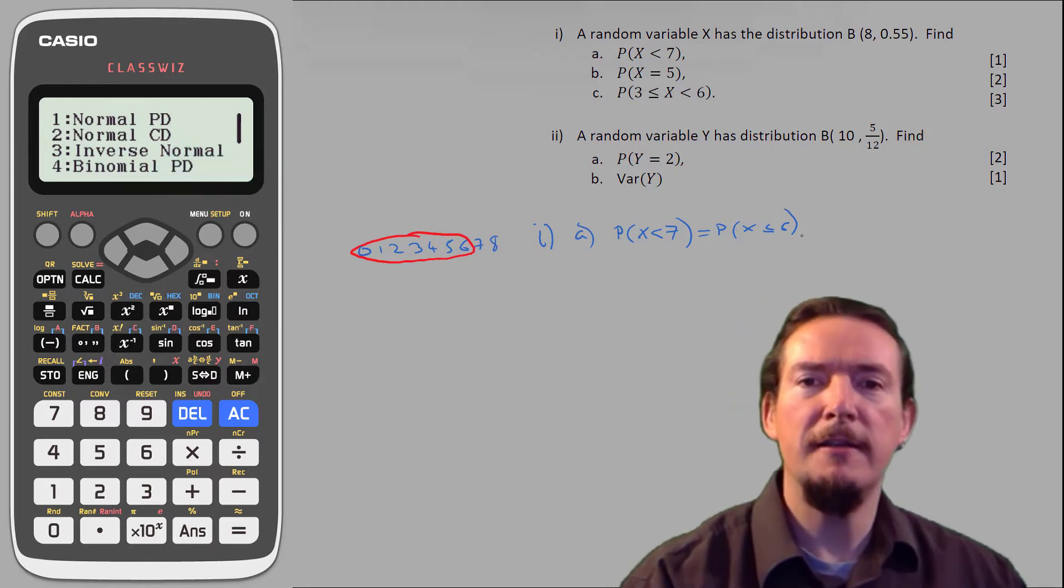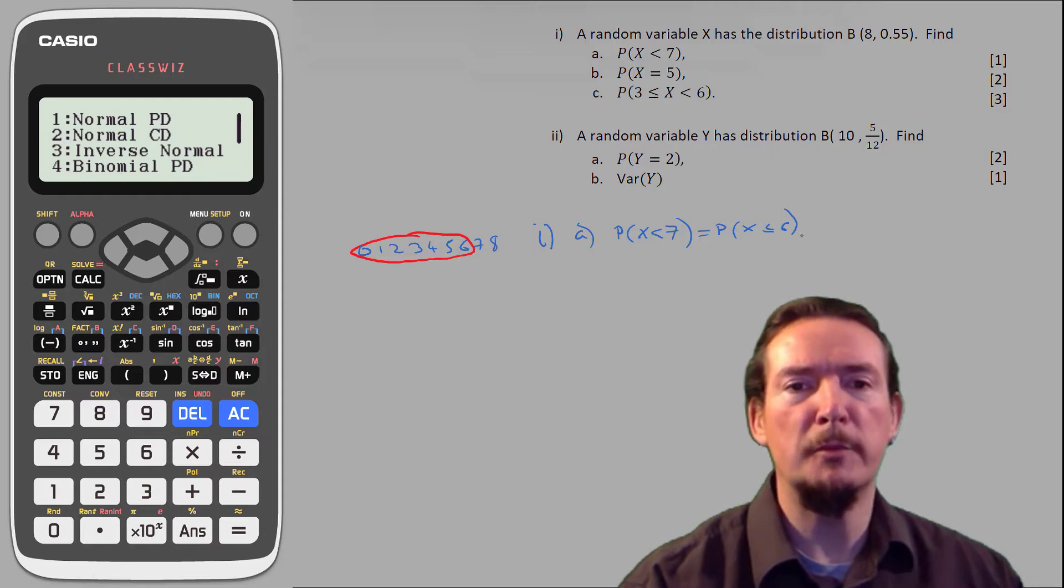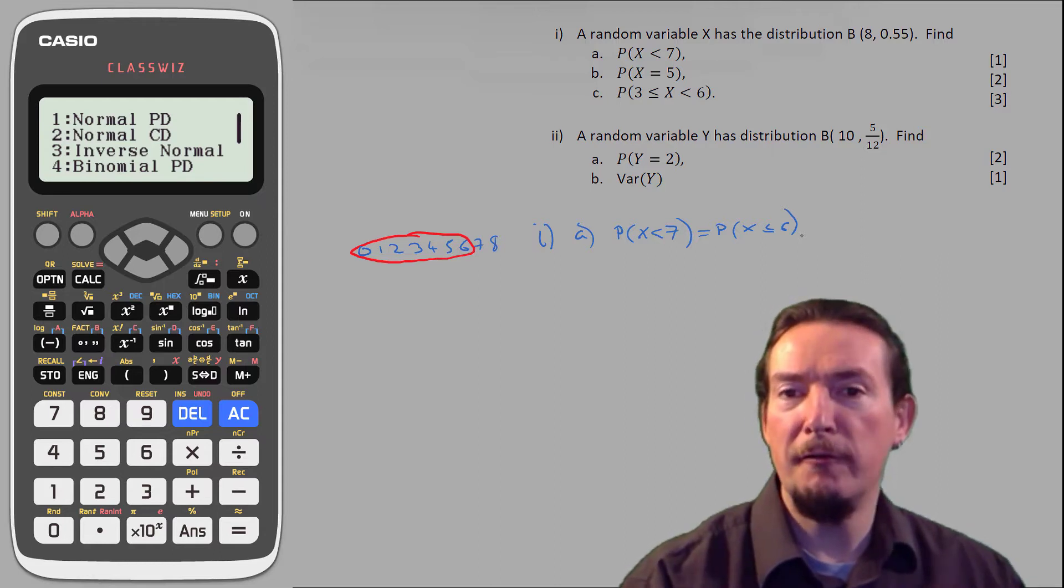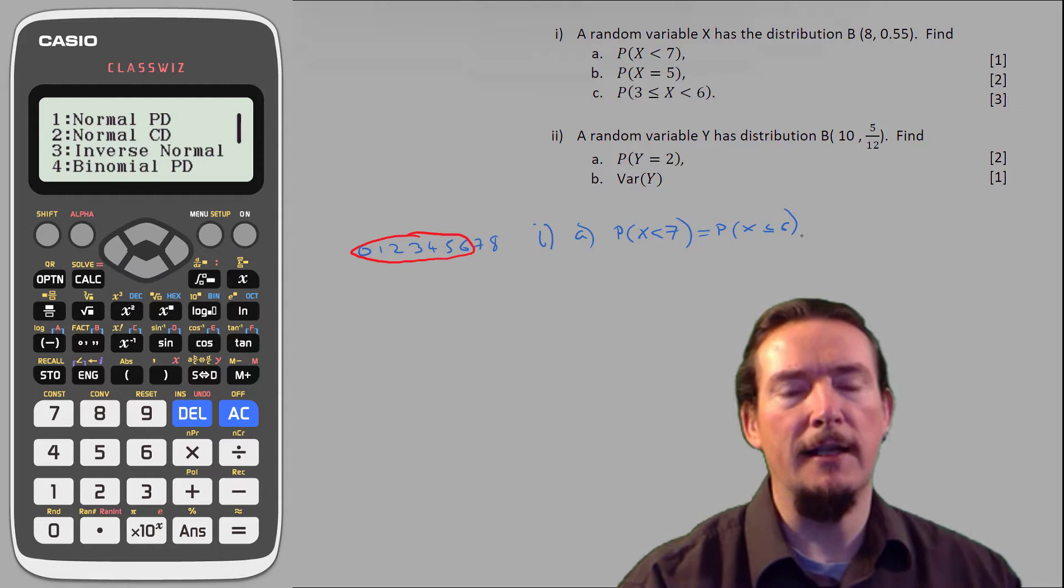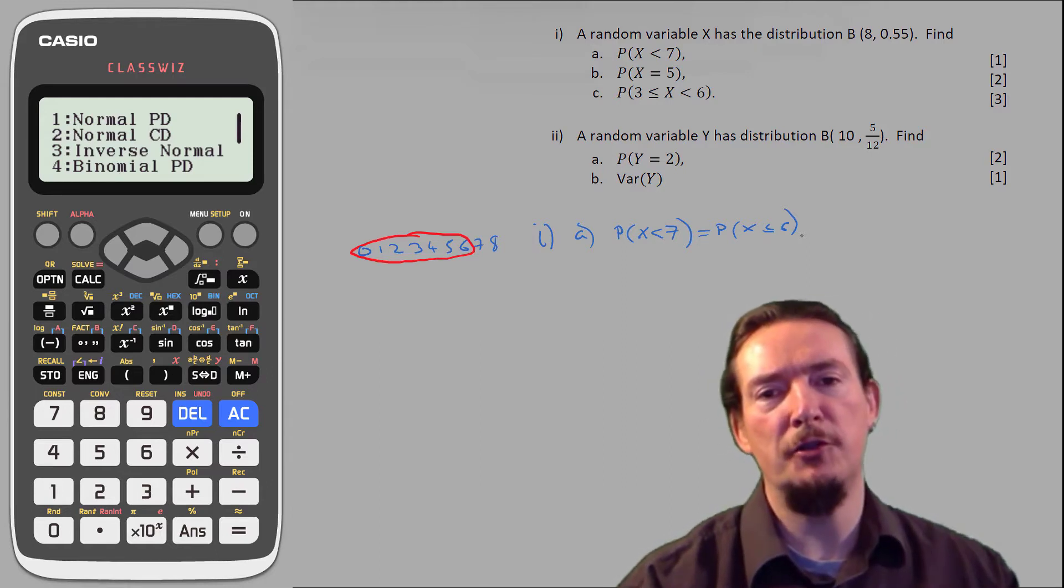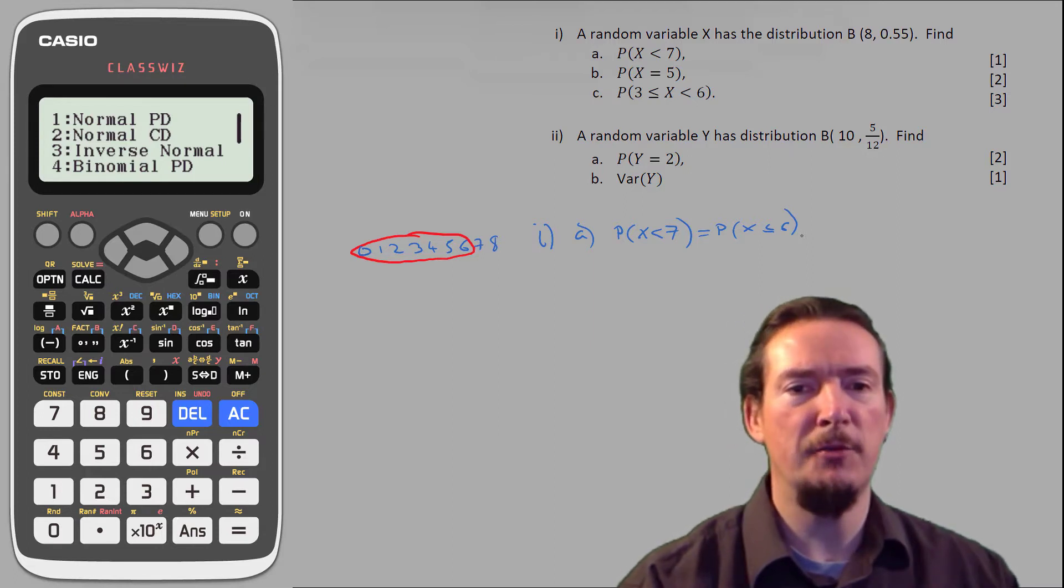Now the classwiz can generate either individual or cumulative probabilities, and can do this either for a single value or for a list of values. The list option is useful if you have a series of questions based on the same distribution, like we do in the first part of this question.